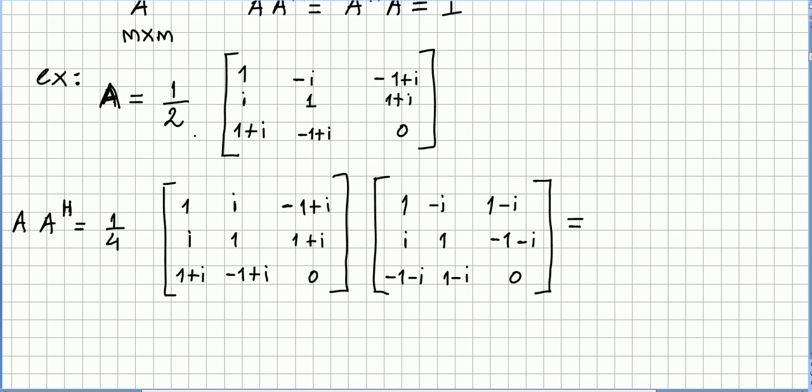So in order to check if this matrix is unitary, we pick matrix A, 1 half of all this and we put it here, times 1 half—that's why we get 1 fourth here—of A Hermitian. Do not forget that the Hermitian matrix is the one where its conjugate transpose is the same as the matrix.